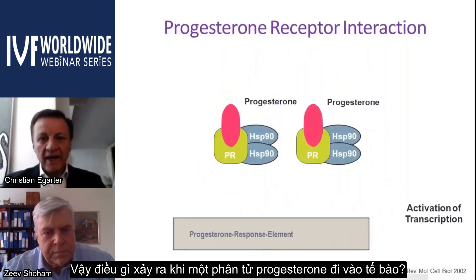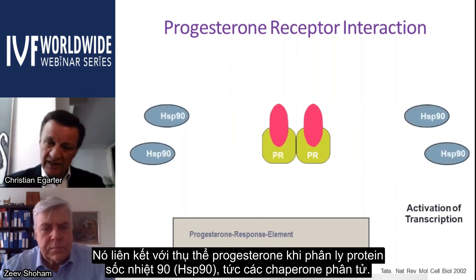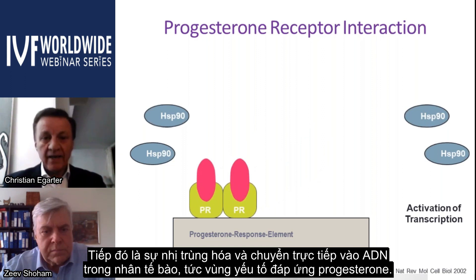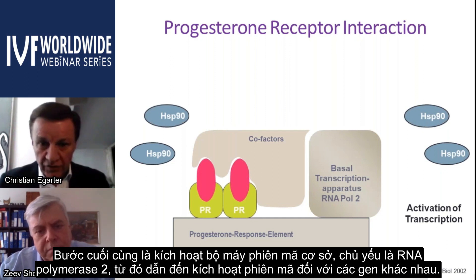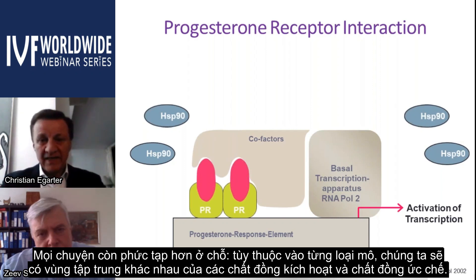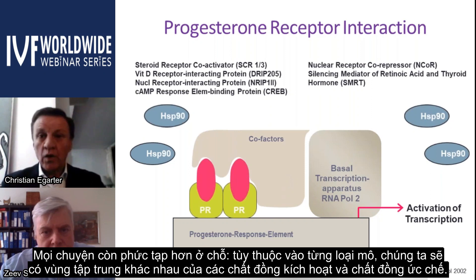When a progesterone molecule enters the cell, it binds to the progesterone receptor, followed by dissociation of heat shock protein 90 chaperones, then dimerization and direct transfer into the nucleus to the progesterone response element. The next step is activation of cofactors — either coactivators or corepressors — and finally activation of the basal transcription apparatus, mainly RNA polymerase 2, leading to gene transcription.